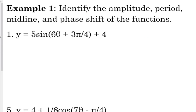We're going to look at number 1, and we're going to look at number 5. So let's look at number 1 first. Our function is 5 sine of 6 theta plus 3π over 4 plus 4. So we need to identify the amplitude, the period, the phase shift, and on the worksheet it says vertical shift. So here I said midline, they're the same thing.